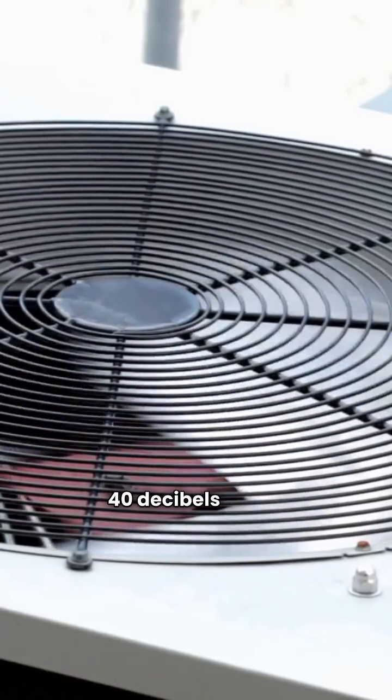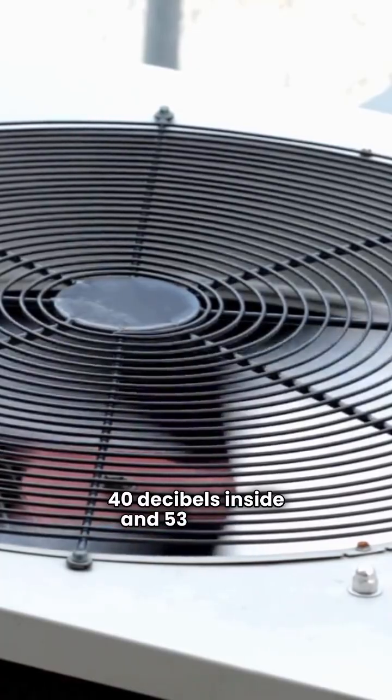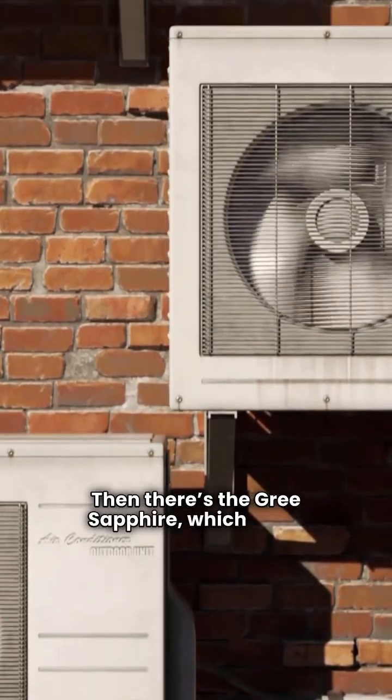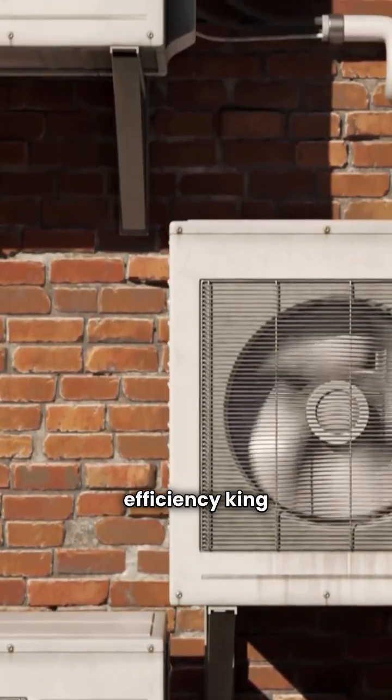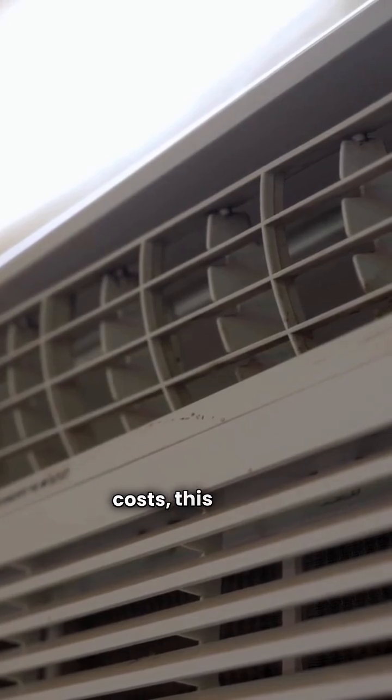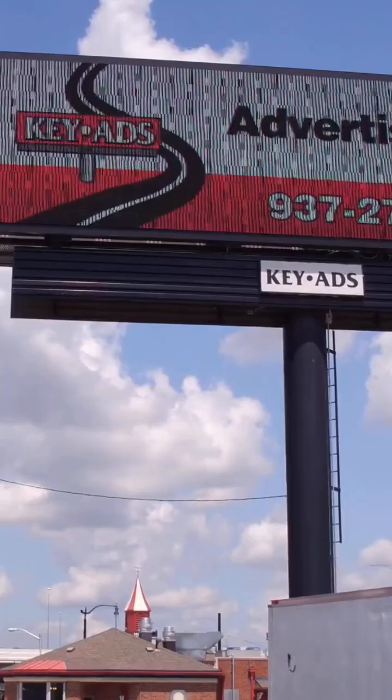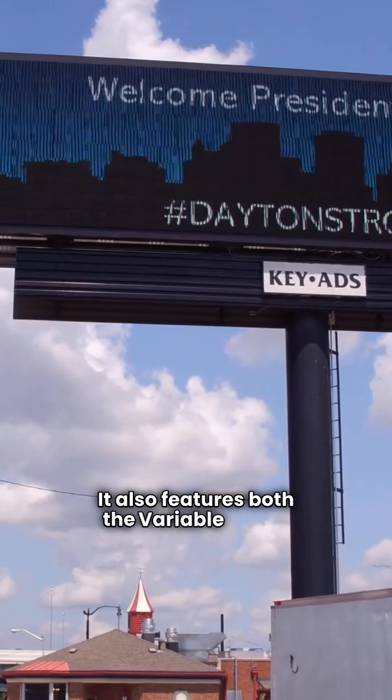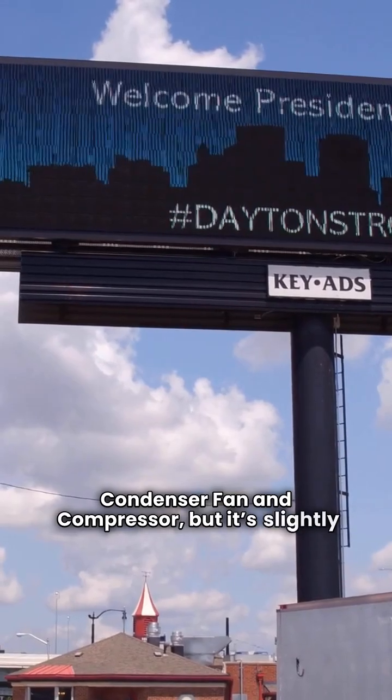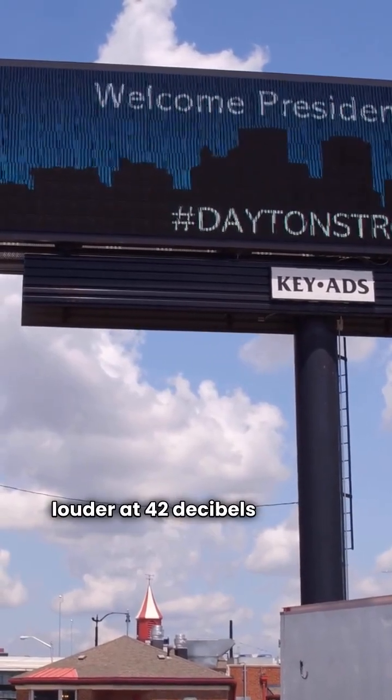Then there's the Gree Sapphire, which is the efficiency king at an incredible 30.5 SEER. If you're in an area with high utility costs, this model is a game-changer. It also features both the variable speed condenser fan and compressor, but it's slightly louder at 42 decibels indoors.